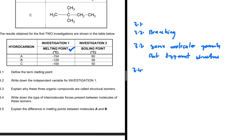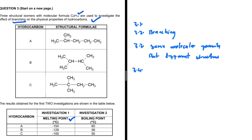Question 3.4: Write down the type of intermolecular forces present between molecules of these isomers. Compounds A, B, and C are hydrocarbons — they only contain hydrogen and carbon. The intermolecular force that exists in hydrocarbons is London forces. London forces exist in all homologous series, including ketones, aldehydes, and carboxylic acids.